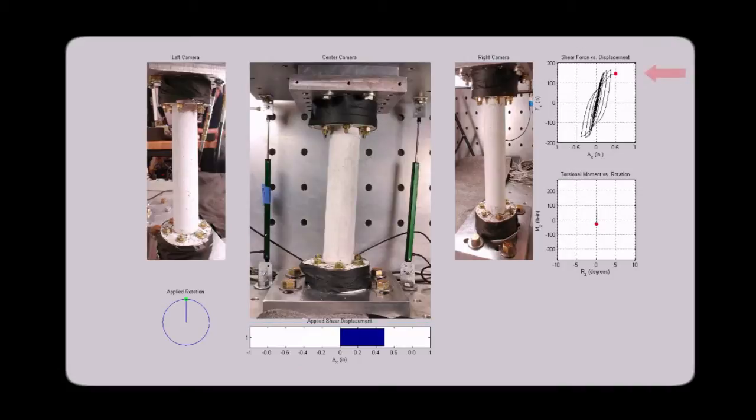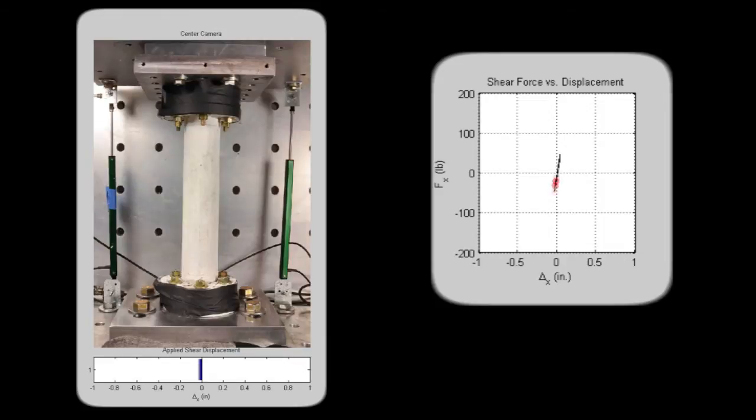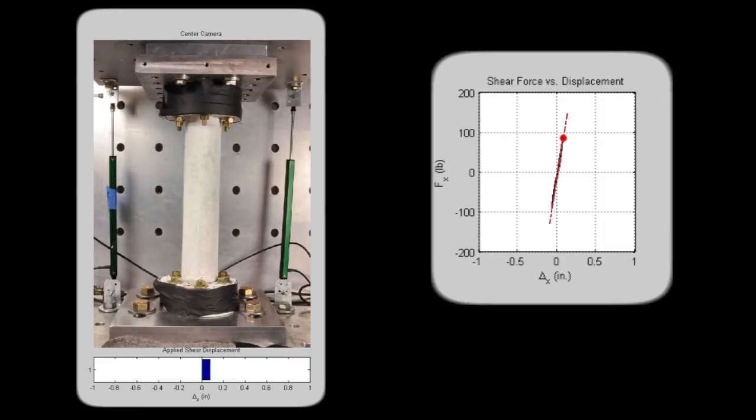The plot in the upper right corner is called a hysteretic response curve and is a plot of the force generated in the pier due to the applied displacements. Note that in this test, there is no applied rotation, as shown by the stationary point on the center circle in the bottom left corner, and no response shown in the bottom right plot. Now as we view the video, notice how the response increases linearly at first, indicating no permanent damage to the pier.